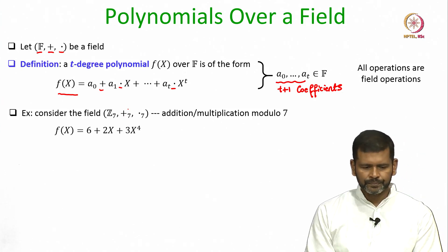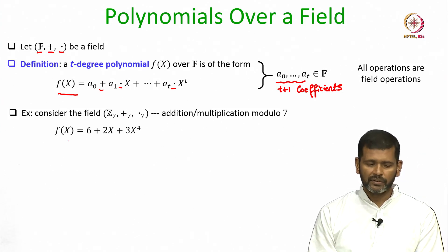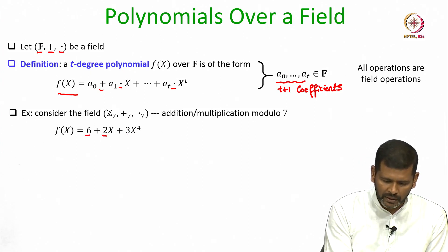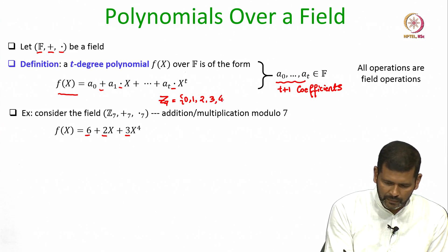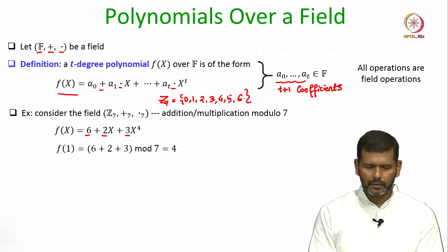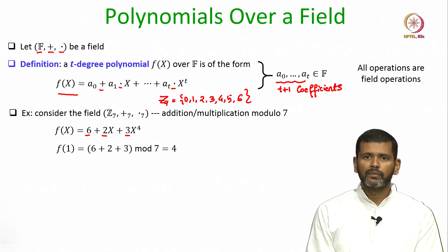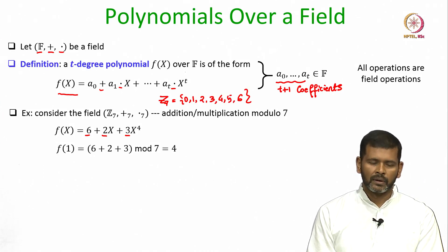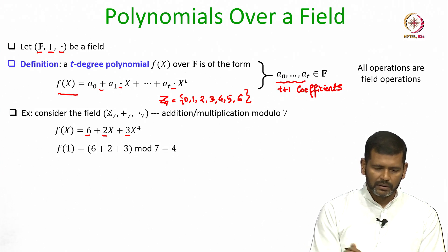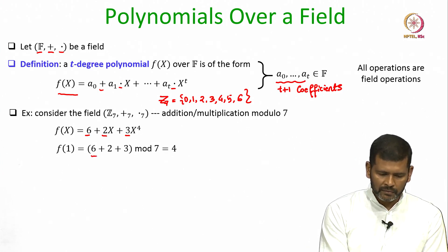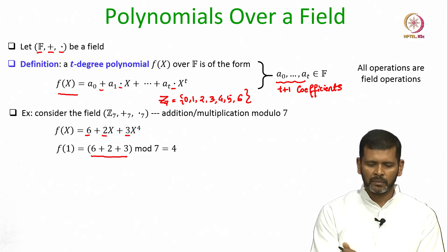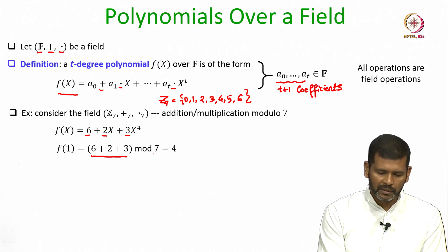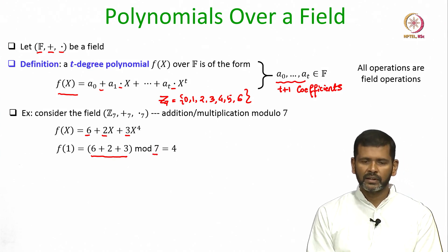Consider this polynomial f(x) with coefficients 6, 2 and 3. Z7 has elements 0, 1, 2, 3, 4, 5 and 6. The value of the polynomial at x=1 is the summation of 6, 2 and 3. Since all addition and multiplication operations are modulo 7, the result is 4.